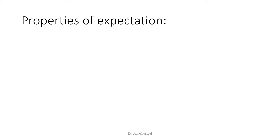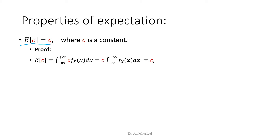We need the following properties of expectation. The first property: the expected value of a constant is the constant itself. We can prove this by taking c outside the integral — the area under the PDF is one, leaving c. So whenever we have the expected value of a constant, the answer is the constant.